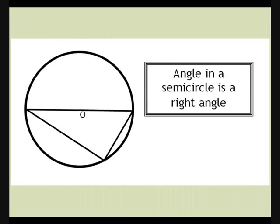A special case of this theorem is that the angle in a semicircle is a right angle, because that's half of 180 degrees. I think it looks like a bird.